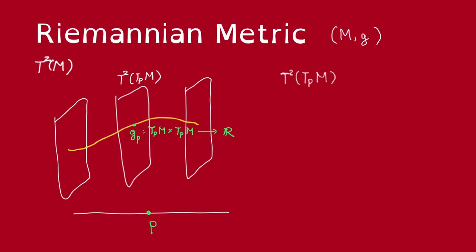So, to give coordinate descriptions for G, let's review coordinate description of two tensors. Recall that if we have a coordinate neighborhood, let's say we have some local coordinate x1 to xn at P, then these dx_i^P form a basis of the cotangent space at P, and the tensor product form a basis then for the two tensor of the tangent space.